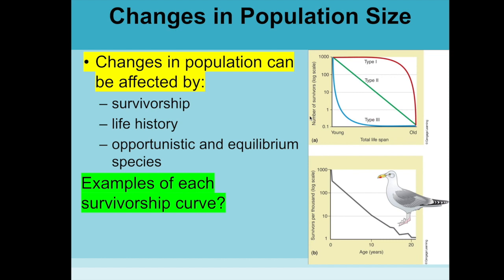Populations can also be affected by survivorship curves. Type I survivorship means parents provided a lot of care, giving offspring a very high chance of survival until a certain age, at which point many start dying off. This represents a lot of parental care with organisms living to a ripe old age in most cases.